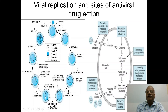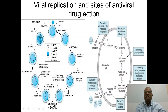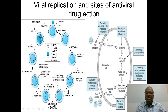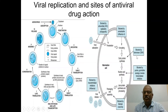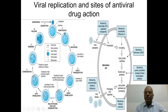The second step is uncoating, that is the release of the genome, which is conveniently blocked by amantidine. Amantidine is mainly effective against influenza A virus. Early protein synthesis — where the translation process is inhibited by fomivirsen in the case of cytomegalovirus.